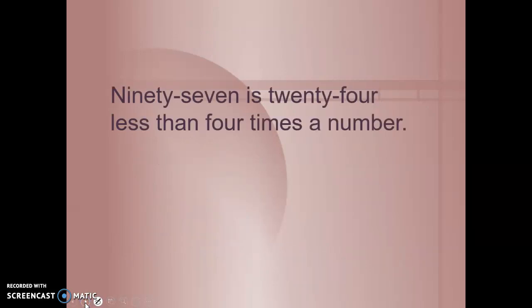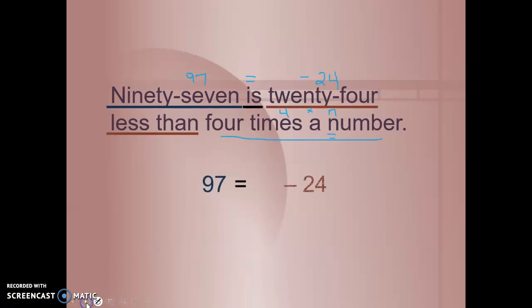Let's take a look at this problem. 97 is 24 less than 4 times a number. We can't really draw a picture of that, but we can translate this into an expression. We know 97 can be represented with a number. Is can be represented with an equal sign. 24 less than is represented with a negative 24. It's 24 less than. And 4 times a number is 4 times. I'm going to use n for my variable since I don't know what that is. 4n or 4 times n. When we write that all as one piece, we get 97 equals 4x minus 24 or 4n if you use n minus 24.